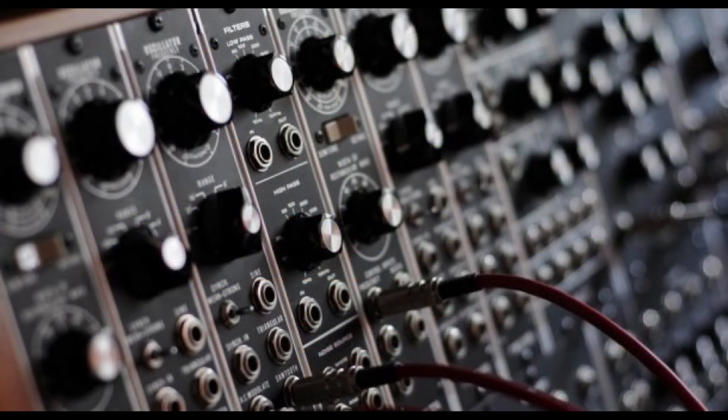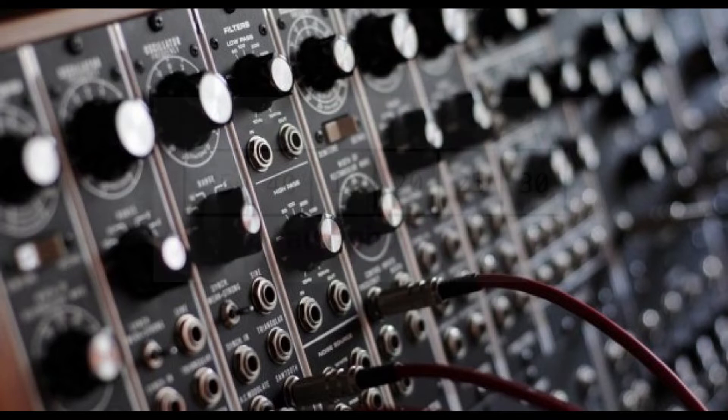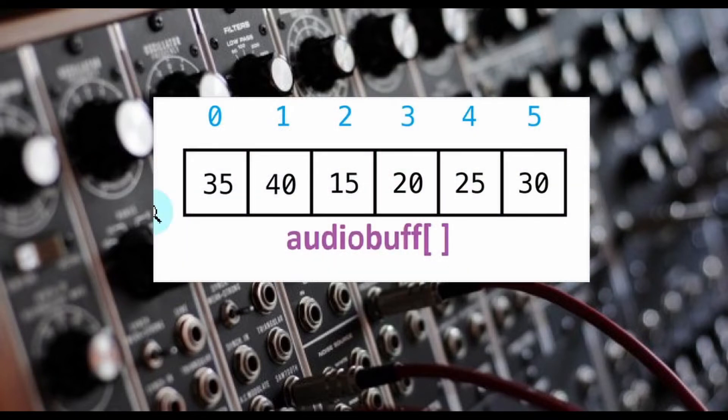The section of memory we will point our DMA to read from will be called a buffer. This buffer is a region of memory that has a beginning address, specified amount of addresses to include in our buffer, and an ending address. We will specify this buffer memory size in our code with the I2S driver. The compiler will specify the actual addresses in the background for us.